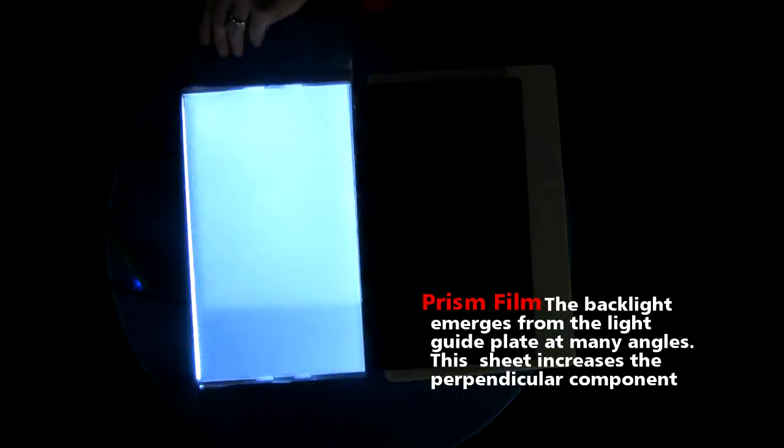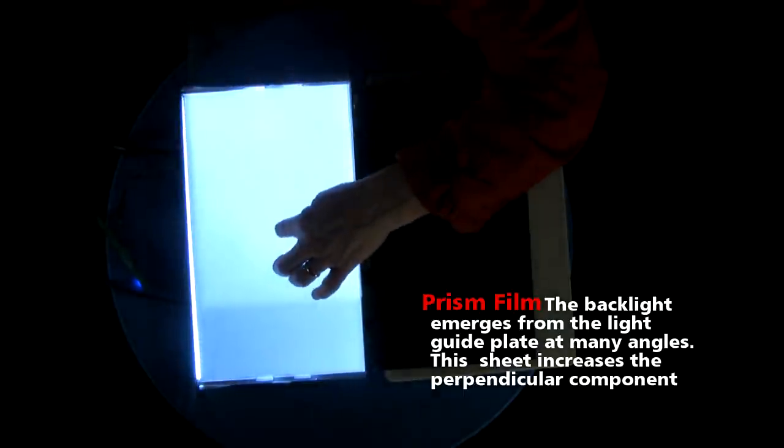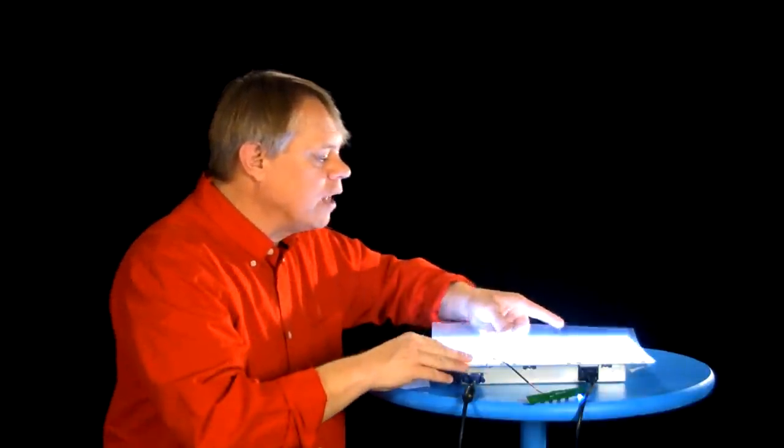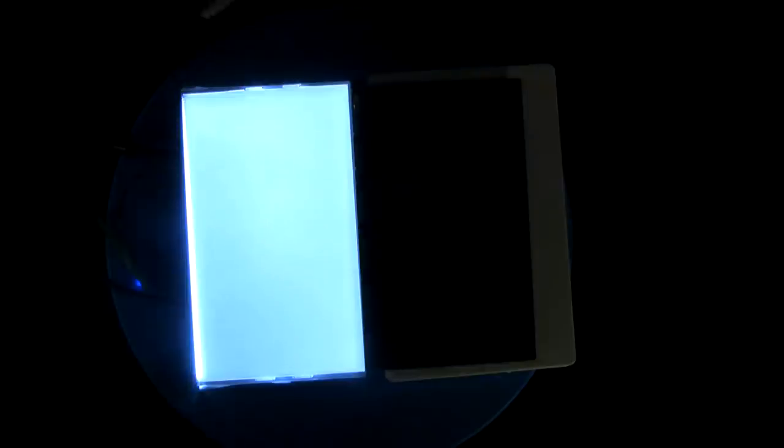Then comes a prism film. You can notice here that where I have the sheet, it's much brighter than where it isn't. So, at this point, if we put the last diffuser film on, we have a very evenly lit surface, all from the single row of LED lights at the bottom.